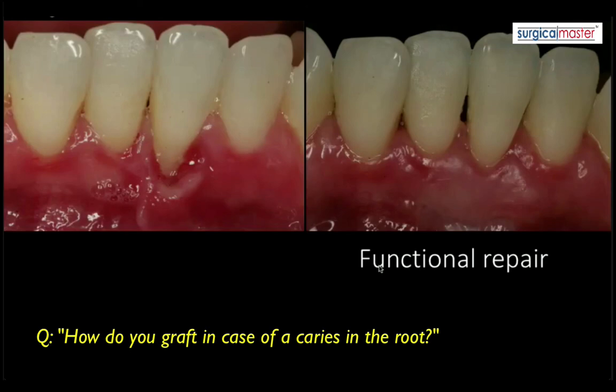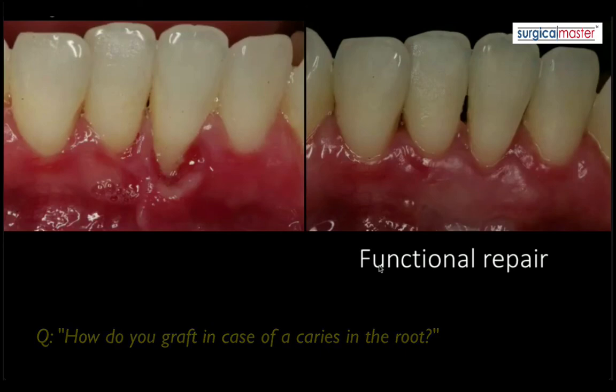Regarding grafting in the case of root caries: you have to clean up the caries and see how far it goes. If it's a very shallow cavity, you can still graft on top of it. If the cavity extends deep into the tooth, grafting is not indicated — that's a limitation of treatment.